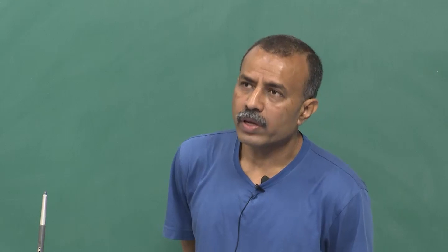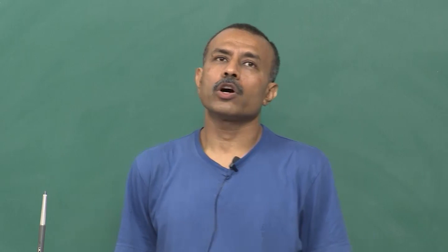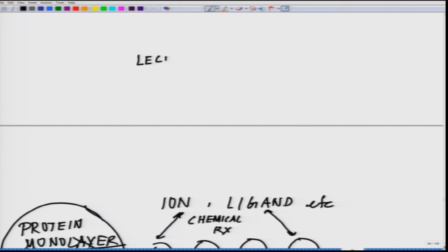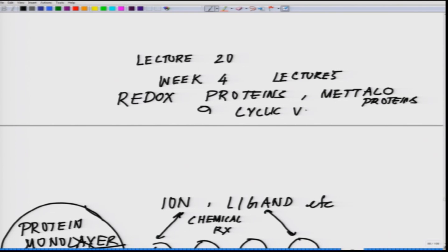One of the strategies is having a monolayer of redox proteins on the surface of the electrode. Today, we will talk about the redox proteins, metalloproteins, and cyclic voltammetry.